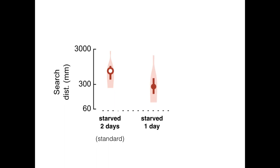But if flies are starved for only one day, or not starved at all, their searches are much more attenuated, covering much less distance. This shows that the internal hunger state of the animal influences the extent of their fictive food-triggered searches.